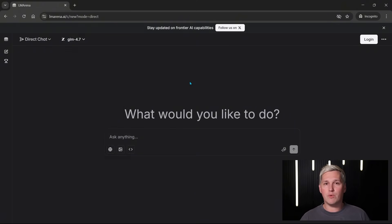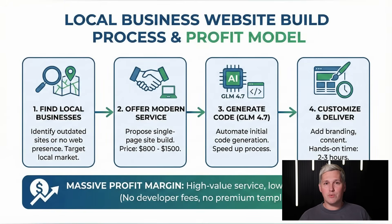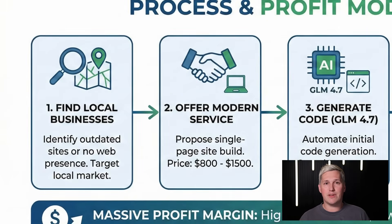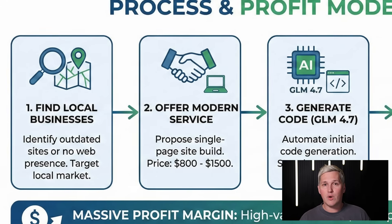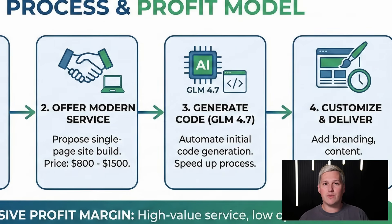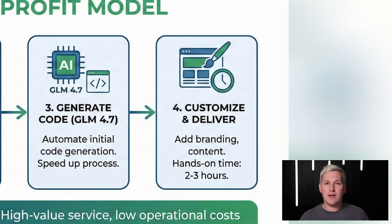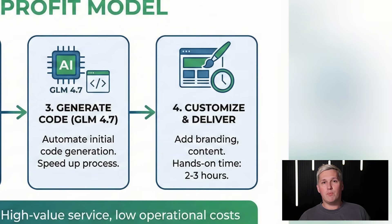Here is the twist almost nobody talks about. You can use GLM 4.7 to create assets you sell to clients as part of service packages. First angle: local business website builds. You find businesses with outdated sites or no web presence. You offer to build them a modern single-page site for $800 to $1,500. You use GLM 4.7 to generate the initial code, then customize it with their branding and content. Your actual hands-on time is maybe two to three hours. Your profit margin is massive because you are not paying a developer or buying premium templates.